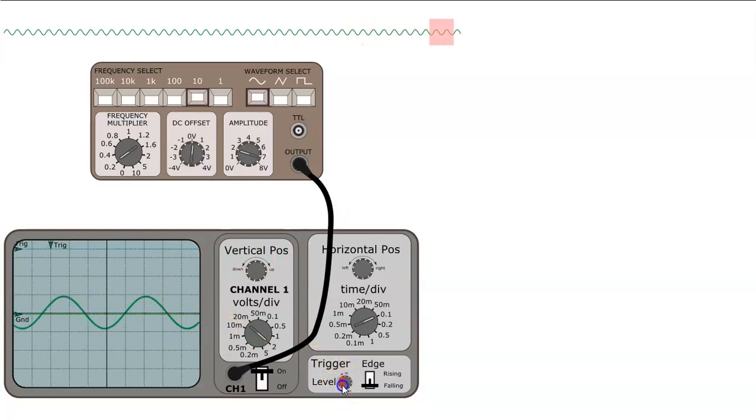So what I'm going to do now is trigger the waveform by adjusting this dial. And when the waveform is triggered you can see that the waveform appears to be stationary. I'm just going to adjust the frequency because sometimes you lose the trigger if the frequency isn't high enough.